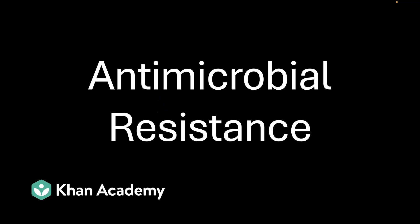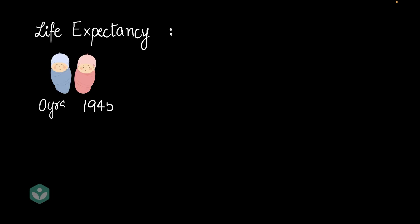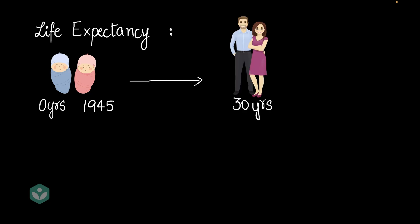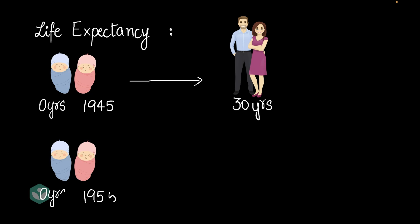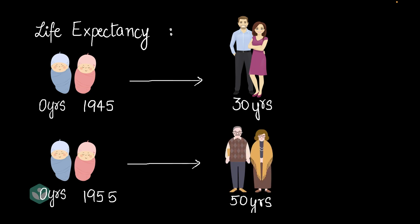In this video, we'll discuss antimicrobial resistance. Let's begin with a little bit of history. Up until 1945, every child born had a life expectancy of just 30 years. But just in 10 years, by 1955, this increased to 50 years. What is it that happened during these 10 years that increased life expectancy so much? Let's explore.